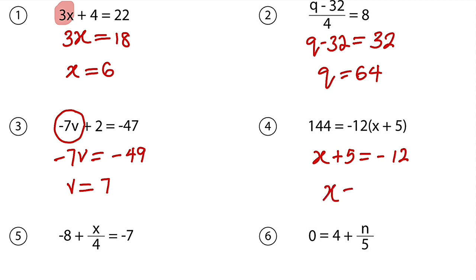Therefore, x is equal to negative 17. And you know in algebra, you can simply take this number to the other side. Once it crosses over, the sign will change. It becomes negative 5. And negative 12 minus negative 5 is negative 17.